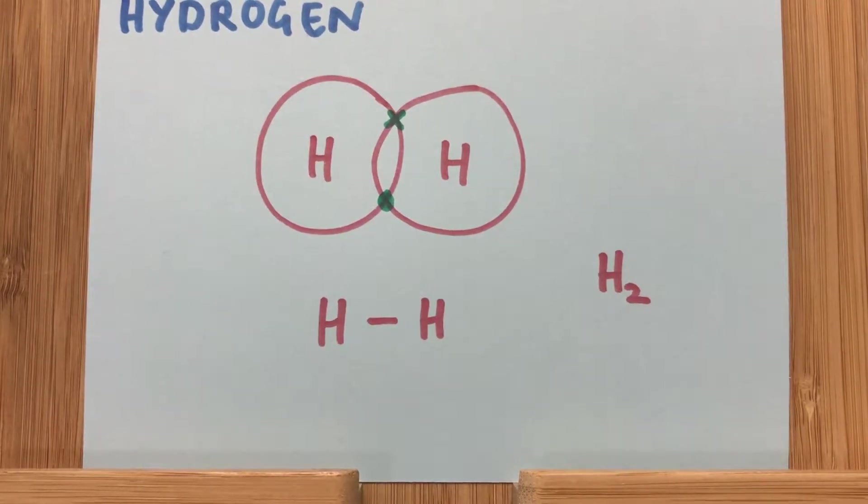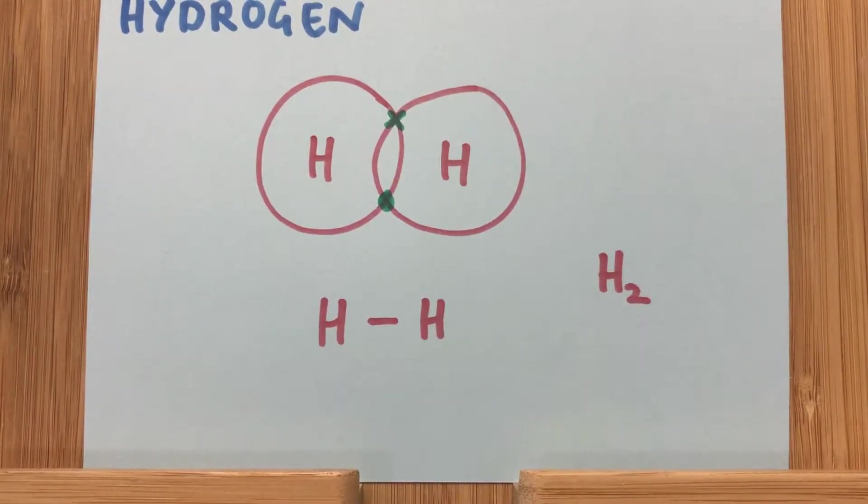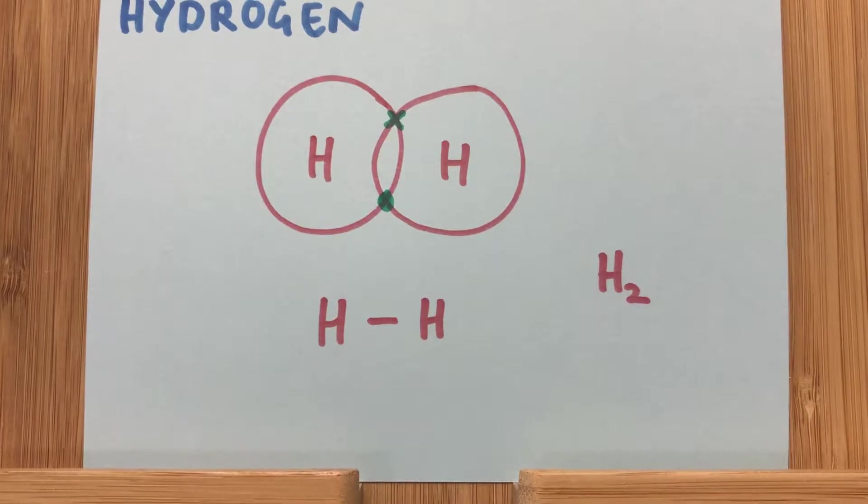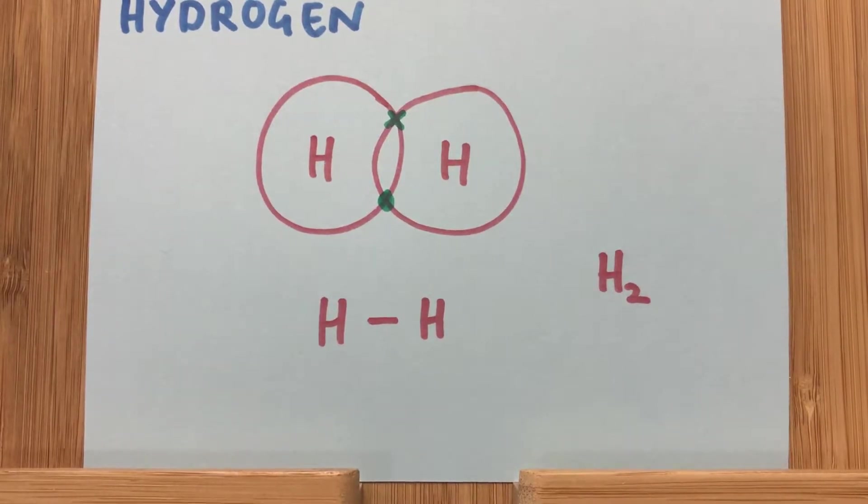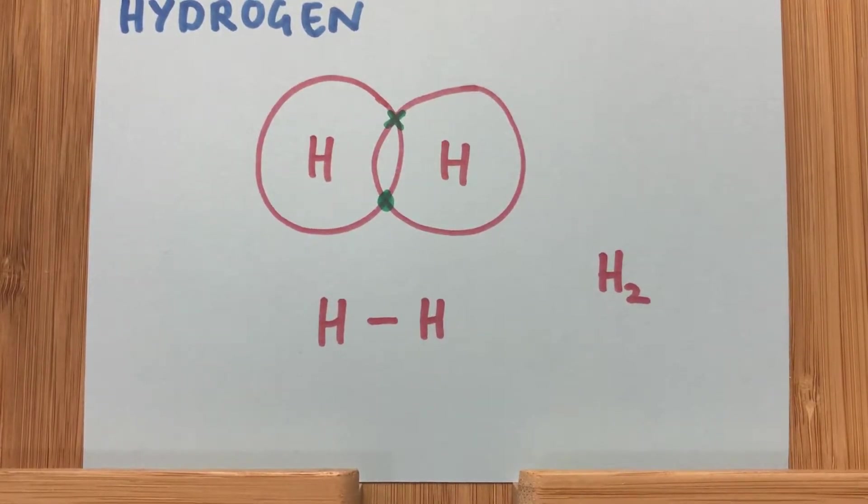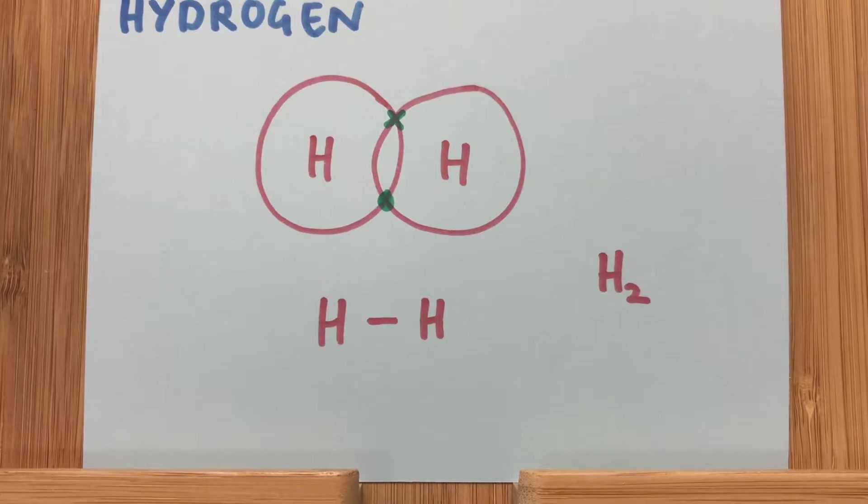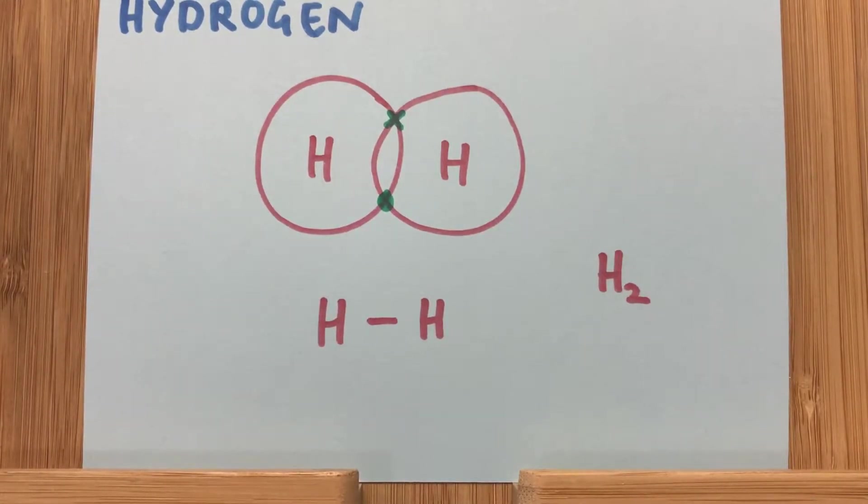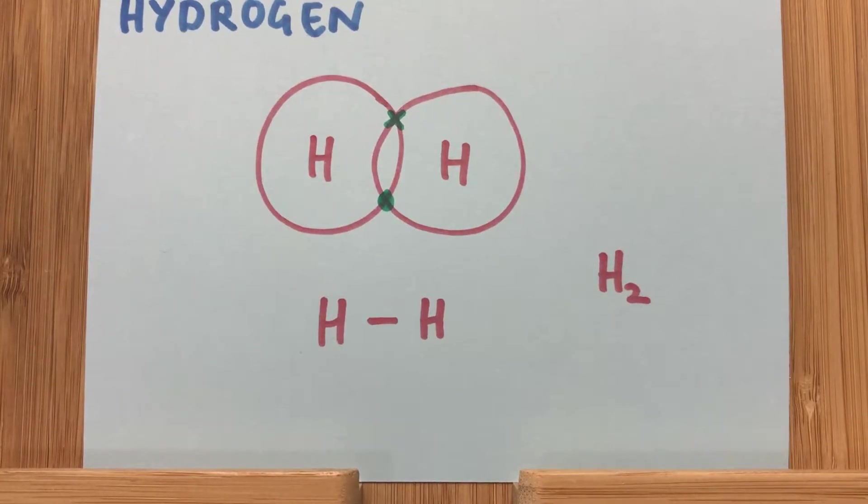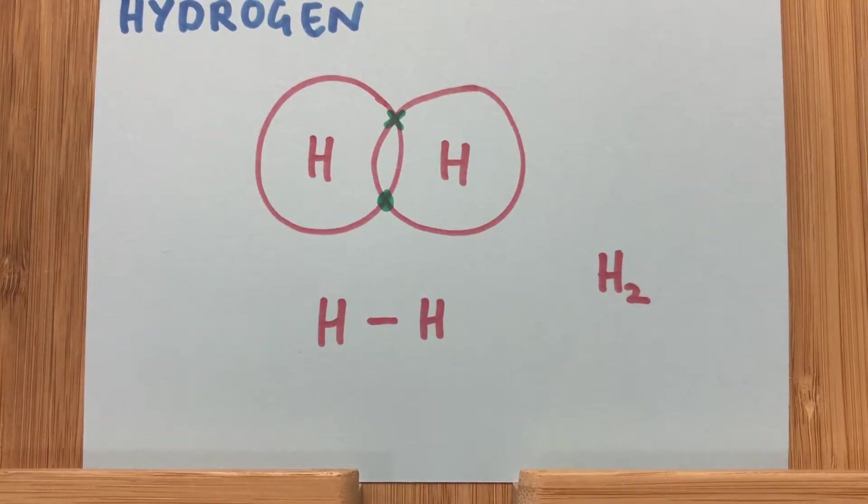It's a case of where the shells cross over, they can share those electrons. So two electrons in the outer shell makes it that full outer shell of electrons for hydrogen because it's only got one shell. Underneath, we've got a stick diagram. One line representing a single bond because they're each only sharing one electron. And then we've got H2 as the formula.